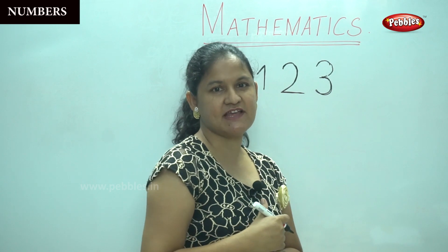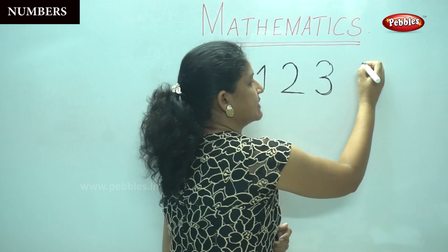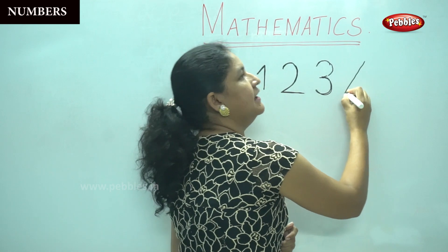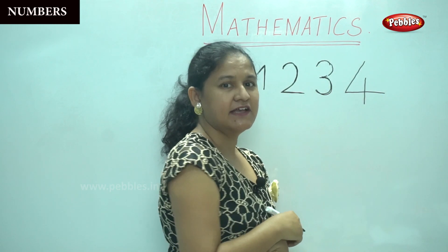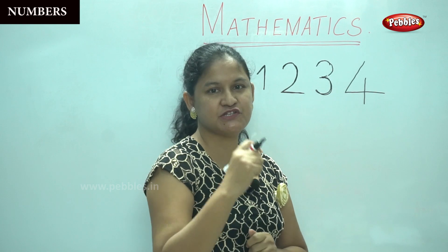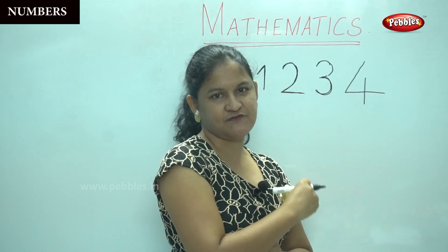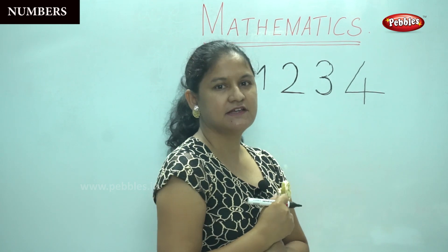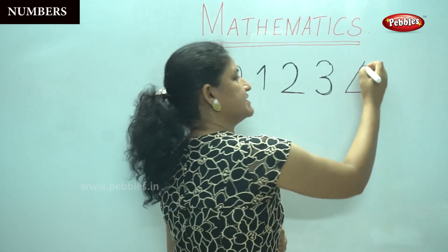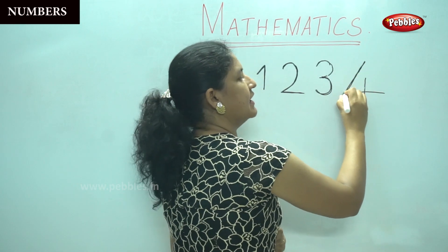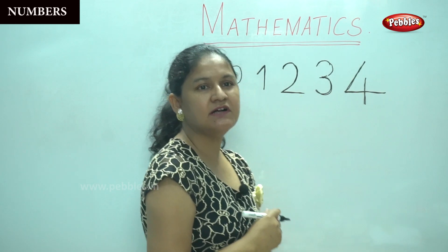Next, we are going to learn to write number 4. For number 4, you will write a slanting line, a sleeping line, and a straight line. It's simple, children? Yes. I want you to take a pencil and paper after I finish and write it too. So now I am going to write number 4 again — a slanting line, a sleeping line, and a straight line. This is number 4.